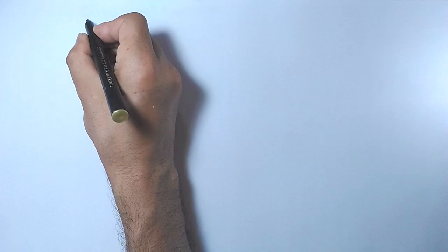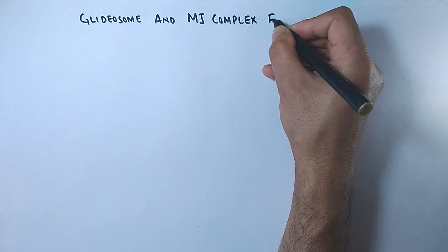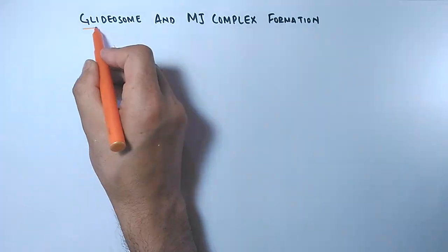By these complex sets of interactions between merozoite ligands and RBC receptors, there is a formation of complex molecular machinery called the glidosome. This glidosome powers motility and takes in the Plasmodium into the host cell.